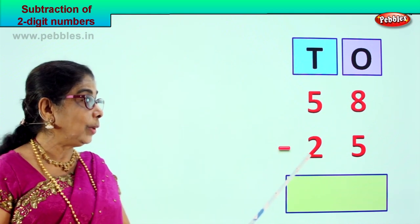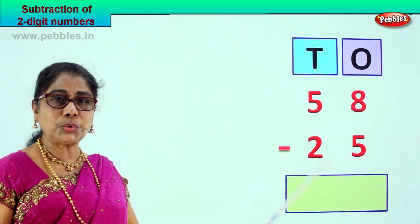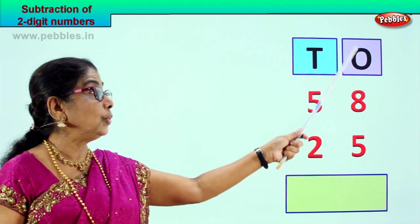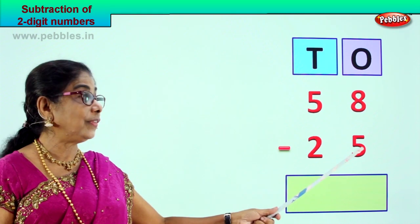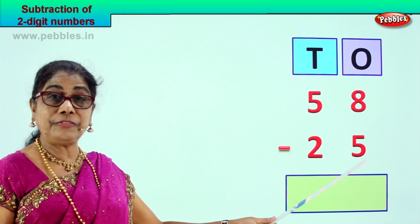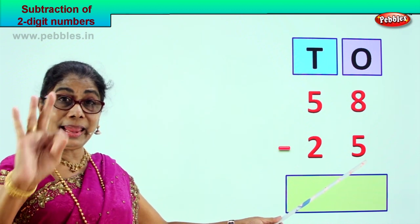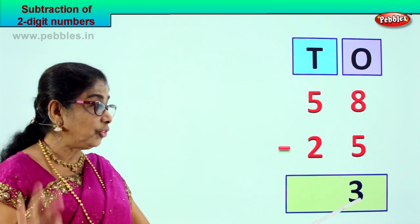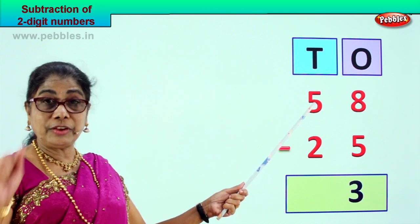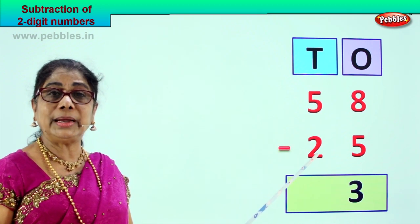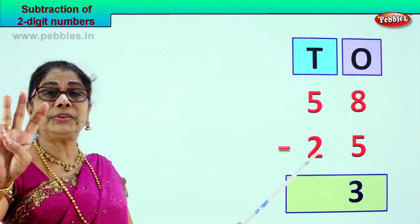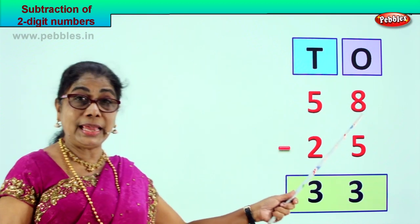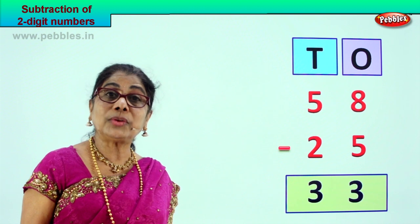Fifty-eight take away twenty-five. Five tens, eight ones minus two tens, five ones. Put them in ones and tens order. Go to the ones place: eight minus five — five, six, seven, eight — eight take away five is three. Now the tens: five take away two — one, two — five minus two is three. Your answer is thirty-three. Fifty-eight minus twenty-five, your answer is thirty-three.